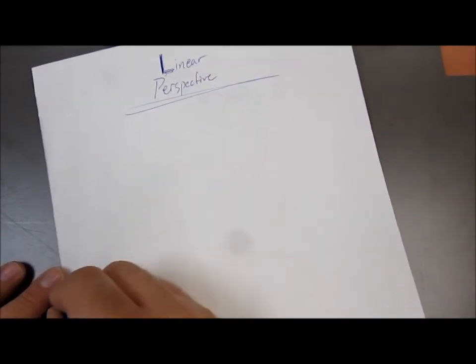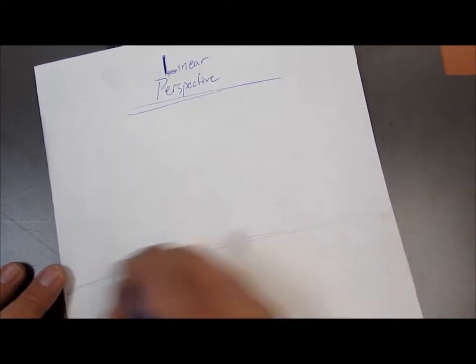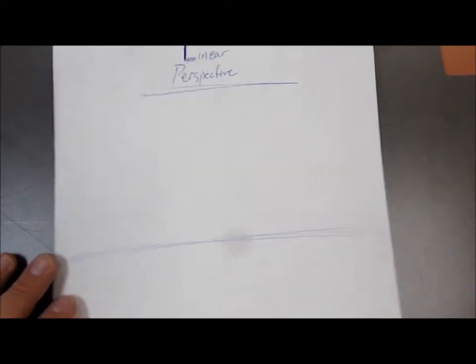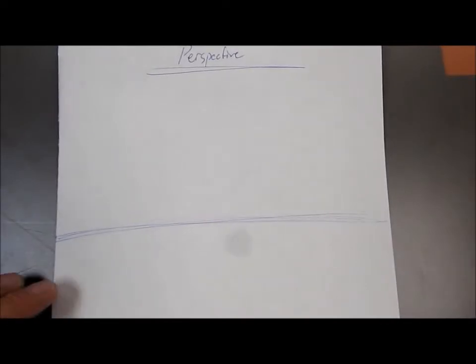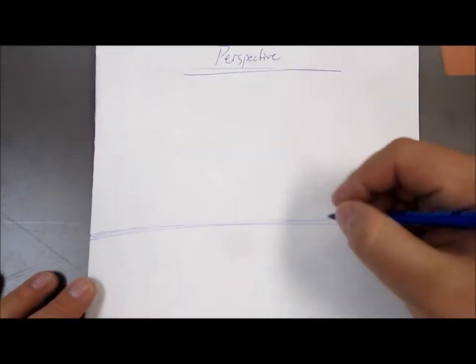Alright, in the middle of the page, going from left to right, do the horizon line. That's what this line is right here. So, left to right, just a simple line going from side to side. Don't want to make it too dark because we can add detail or stuff on top of it later just so we have something down.